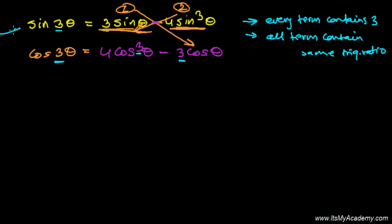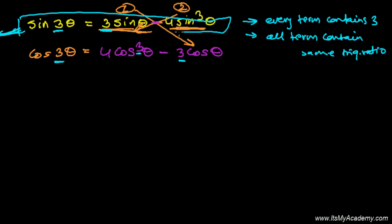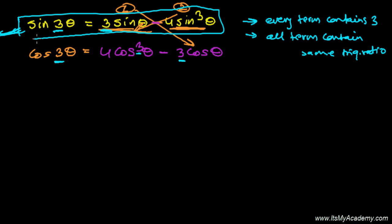You learn the sine trigonometric ratio first, so when writing the sine 3 theta formula, 3 comes first: 3 sine theta — because you're learning 3 theta, thrice of theta. You should first know how to write the sine 3 theta formula, and then cosine 3 theta is just opposite: replace the first term by the second term and sine by cosine — that's it.